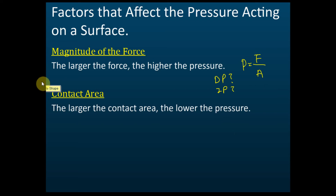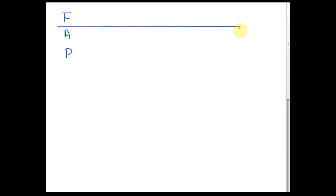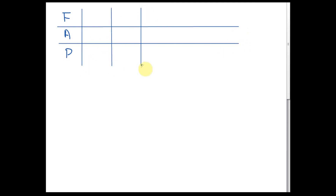Now I'm going to explain what directly proportional and inversely proportional mean. Let's use the example of force, area, and pressure. For the first case, let's say the area is constant — one meter squared every time.